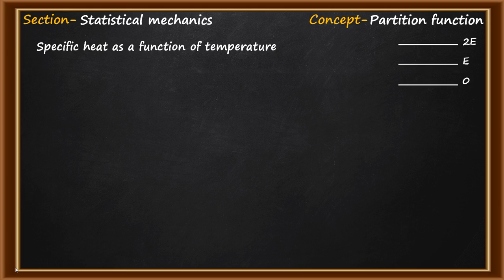When we deal with a many-particle system at thermal equilibrium, the constituent particles have microscopic properties like position and momenta. The system as a whole also has macroscopic properties. To describe the macroscopic quantities of the whole system, we need a tool that can correlate them with the microscopic details — and that is what the partition function does. So to evaluate the specific heat of this three-state system, we need to know the partition function, and from that we can evaluate the specific heat.